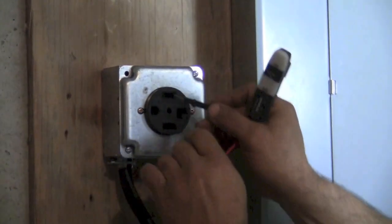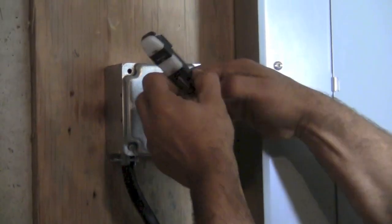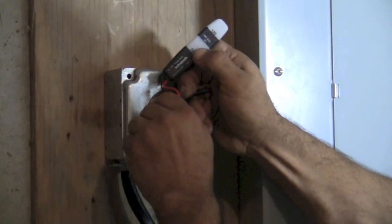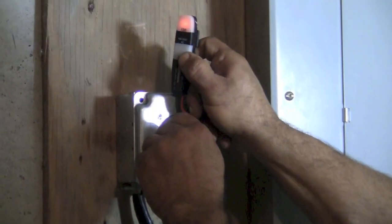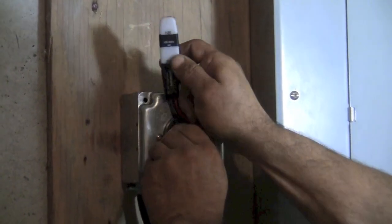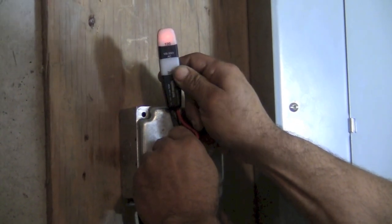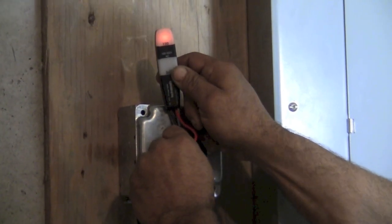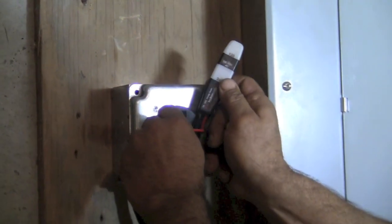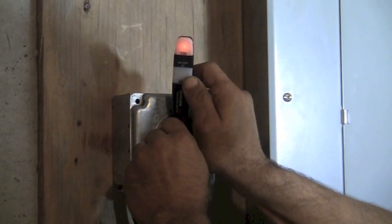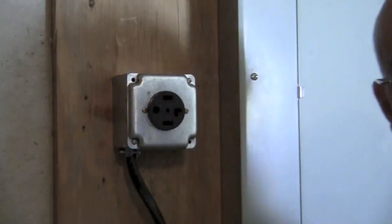If we just leave that into our hot, and we can go to our ground. Also 120. So we're checking all our connections. We're going to go to our other hot. And we also have 120. Honky dory.